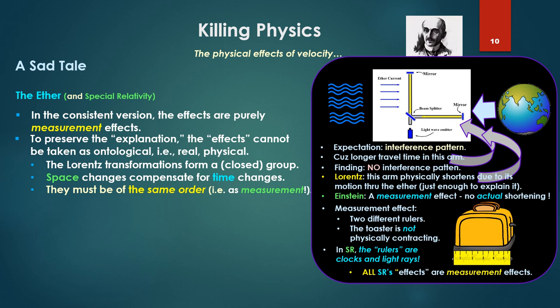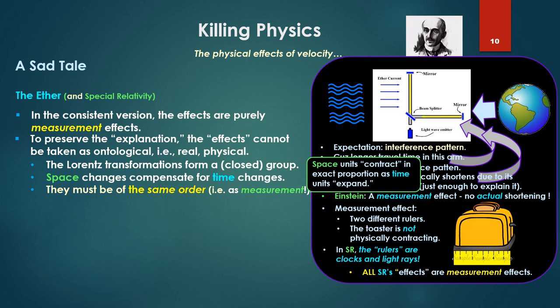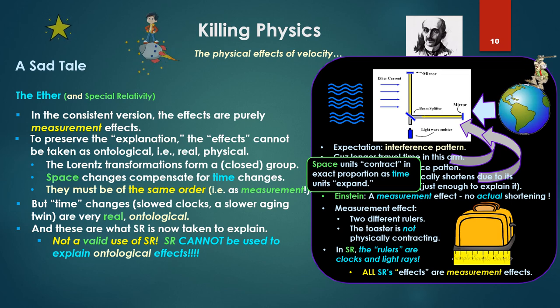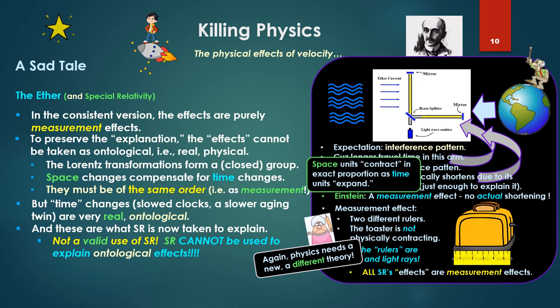All special relativity's effects, so-called, are measurement effects, not real ontological effects. But to preserve the explanation, then, the effects cannot be taken as ontological, as real or physical. In the explanation of Michelson-Morley, those arms cannot be physically contracting. The Lorentz transformation is, however, a form of closed group. Space changes compensate for time changes. The space units contract in exact proportion as time units expand. So they must be of the same order, that is measurement. You can't pull them apart and treat them differently. But time changes now - slowed clocks, slower aging twin - are very real, very ontological. They can't be measurement effects. And yet, these are now what special relativity is taken to explain. But this is not a valid use of special relativity. SR cannot be used to explain ontological effects.